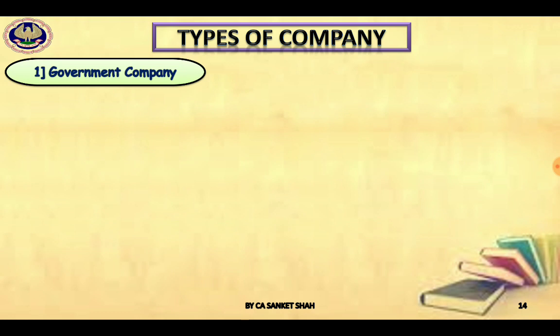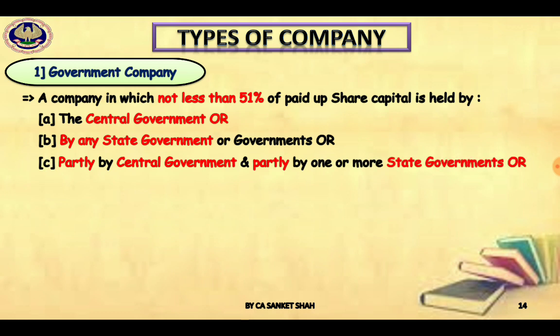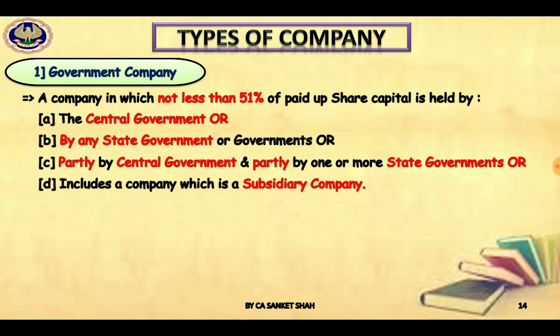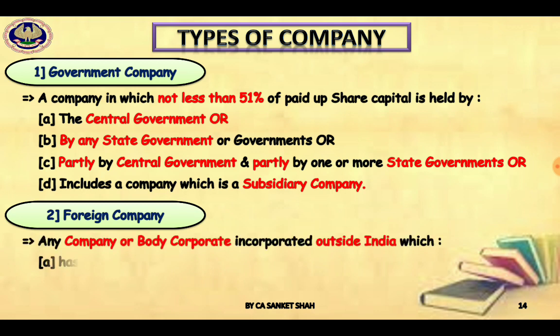Government company means a company in which not less than 51 percent of the paid-up capital is held by the government — central government, state government, or partly by both. It also includes a company which is a subsidiary of such a company. So more than 50% of share capital must be held by the government.